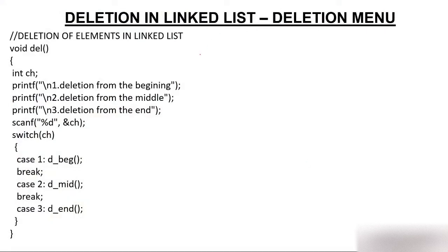We already have a menu. In delete, you have three cases: delete beginning (press 1), delete middle (press 2), and delete end (press 3). So we press 3, the variable ch will have value 3, switch will have value 3, we jump to case 3, and in case 3 we are calling the delete end function.